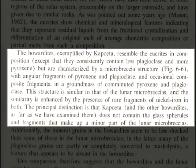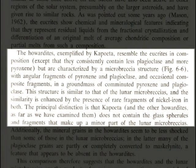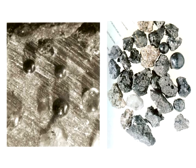resemble eucrites in composition, except they consistently contain less plagioclase and more pyroxene, but are characterized by a microbreccia structure with angular fragments of pyroxene and plagioclase, and occasional composite fragments in a groundmass of comminuted pyroxene and plagioclase. This structure is similar to that of the lunar microbreccias, and the similarity is enhanced by the presence of rare fragments of nickel-iron in both. The principal distinction is that Capoeita does not contain the glass spherules in fragments that make up a minor part of the lunar microbreccias.